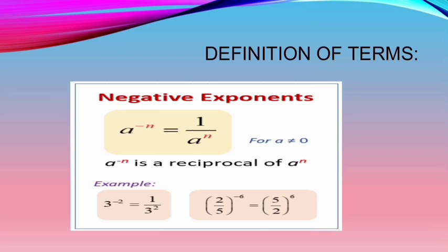Next, we have the definition of negative exponents. We have a to the power of negative n equals 1 over a to the power of n, for a not equal to 0. So a to the power of negative n is the reciprocal of a to the power of n. For example, 3 to the power of negative 2 gives 1 over 3 to the power of 2. Also, 2 fifths to the power of negative 6 gives 5 to the power of 6 over 2 to the power of 6.